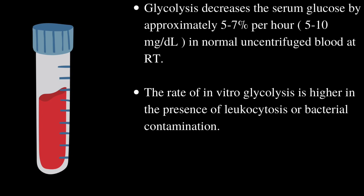Glycolysis decreases the serum glucose by approximately 5 to 7 percent per hour, or 5 to 10 milligrams per deciliter, in normal uncentrifuged blood at room temperature. The rate of in vitro glycolysis is higher in the presence of leukocytosis or bacterial contamination.